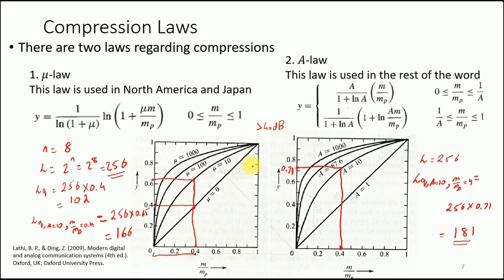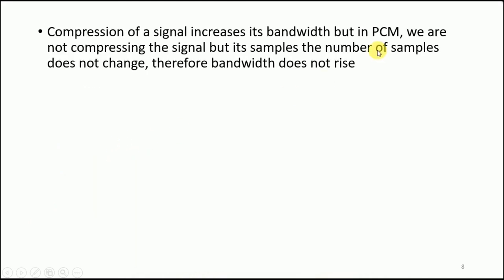An important point is that we have not increased the number of quantization levels, but we have increased the overall SNR by ensuring low amplitude signals are better quantized with lower quantization noise, compared to a uniform quantizer. This does not increase bandwidth: we are not compressing the signal in the time domain — only its samples — and the number of samples does not change, therefore bandwidth does not rise.